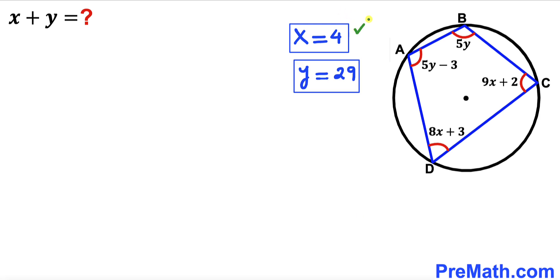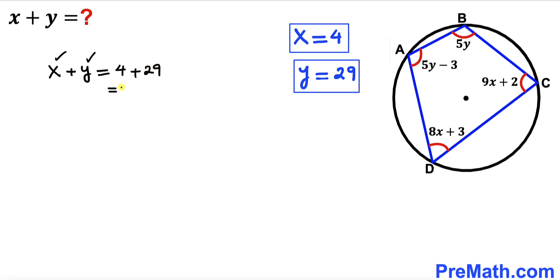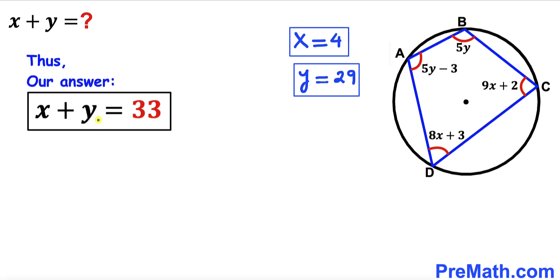So x equals 4 and y equals 29. For the final step, x plus y equals 4 plus 29, which gives us 33. Therefore, x plus y equals 33, and that is our final answer.